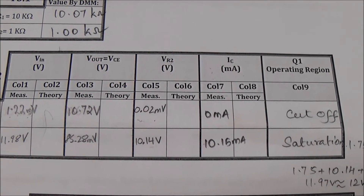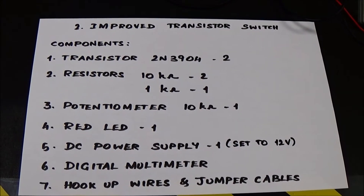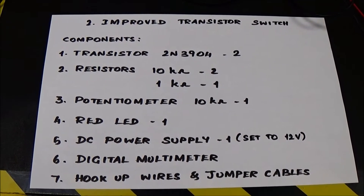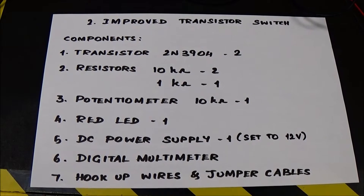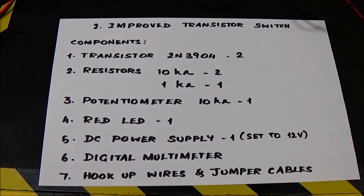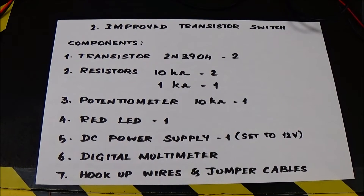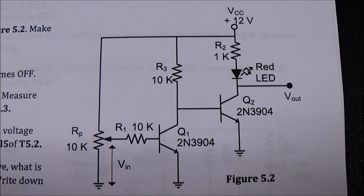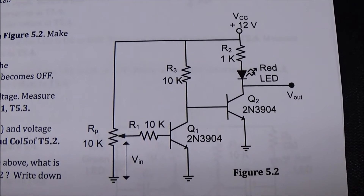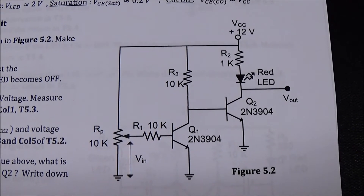I am going to connect the improved transistor switch now. For an improved transistor switch, the components required are: transistor 2N3904 two pieces, resistors 10 kilohm and 1 kilohm, potentiometer 10 kilohm, red LED one, DC power supply set to 12 volts, digital multimeter, and hookup wires and jumper cables. The circuit diagram consists of two transistors for lighting up one LED.